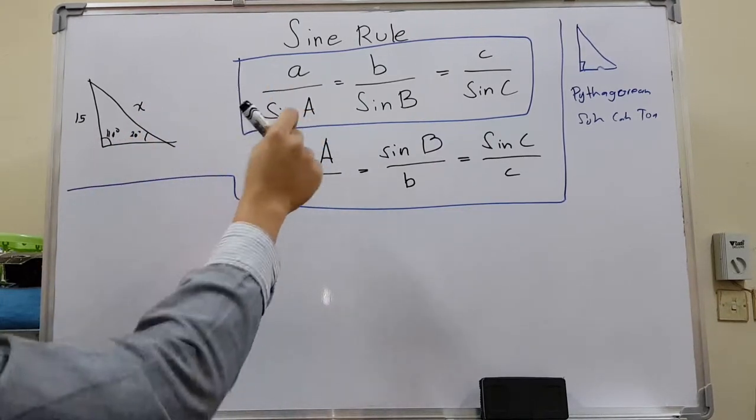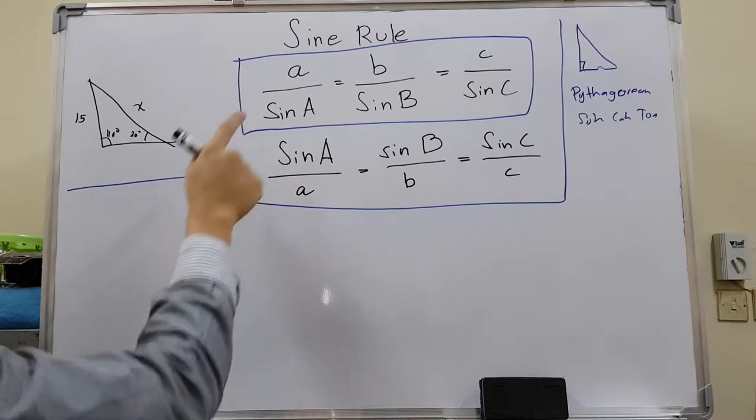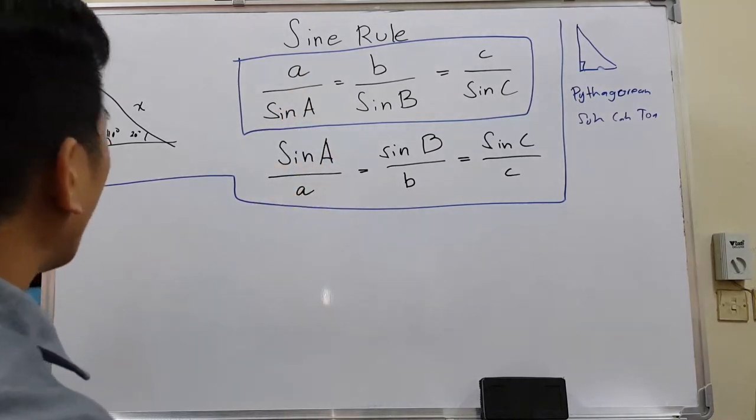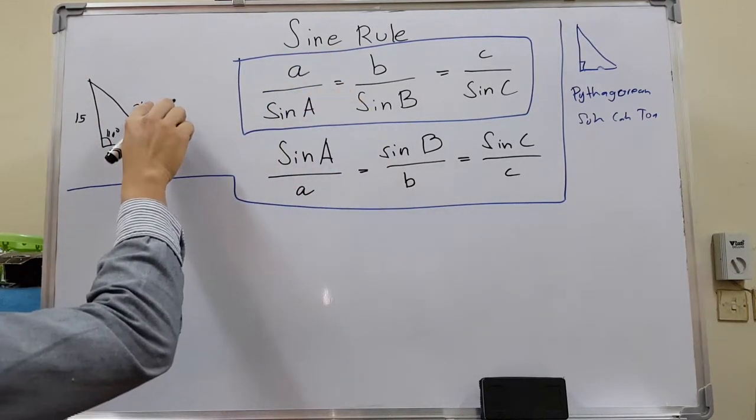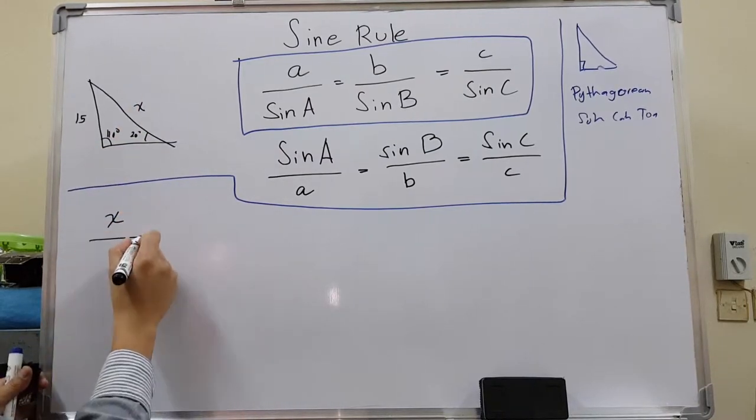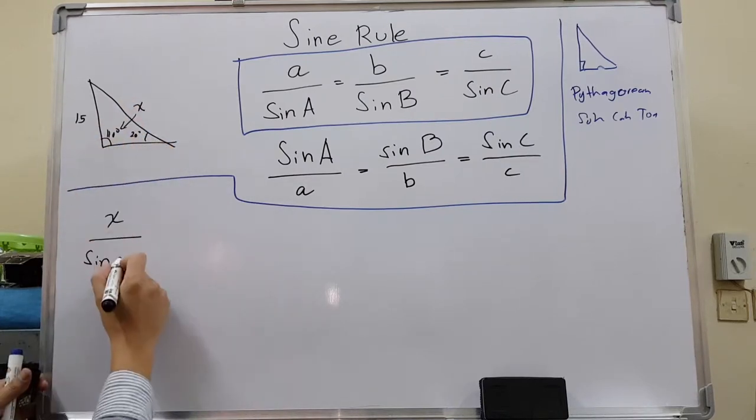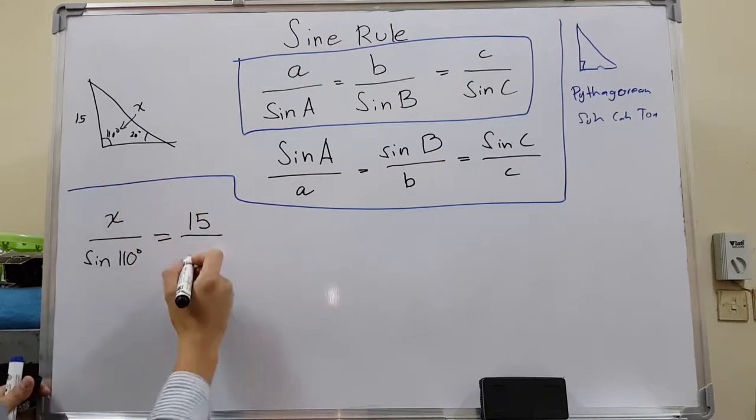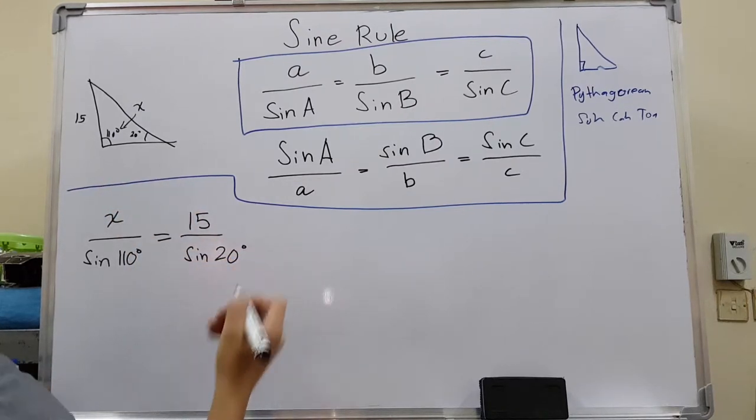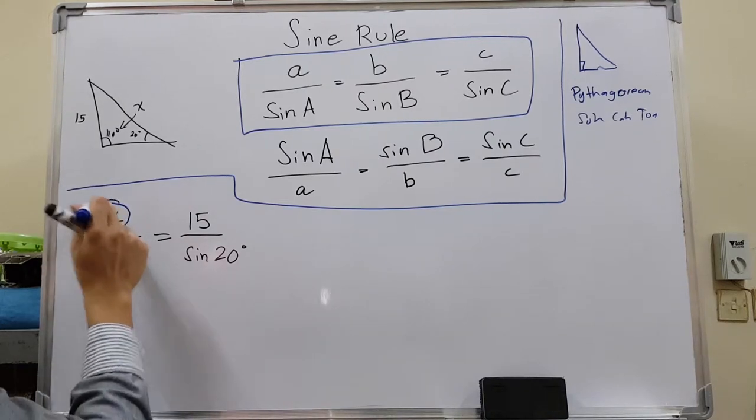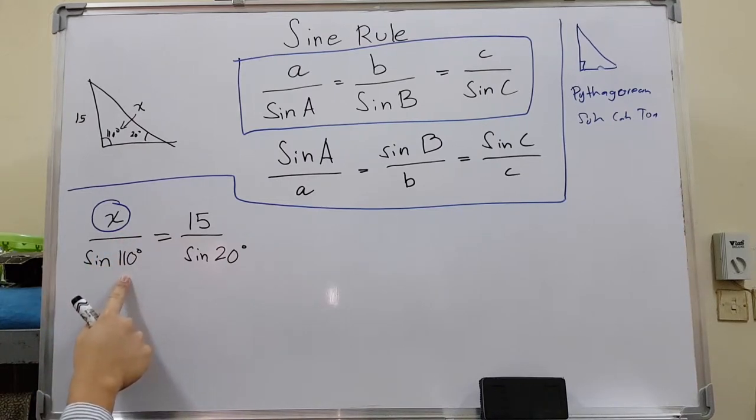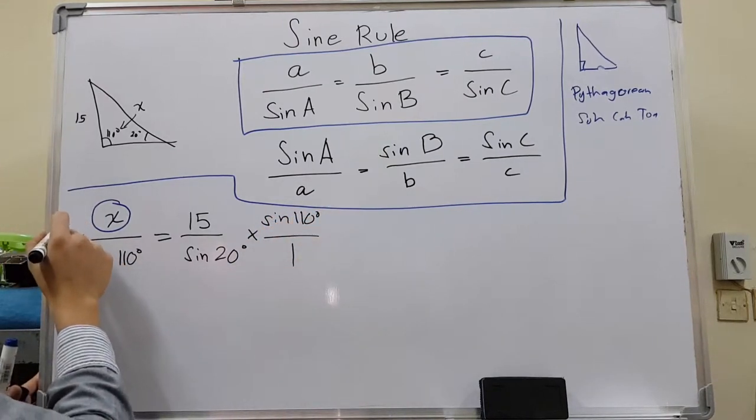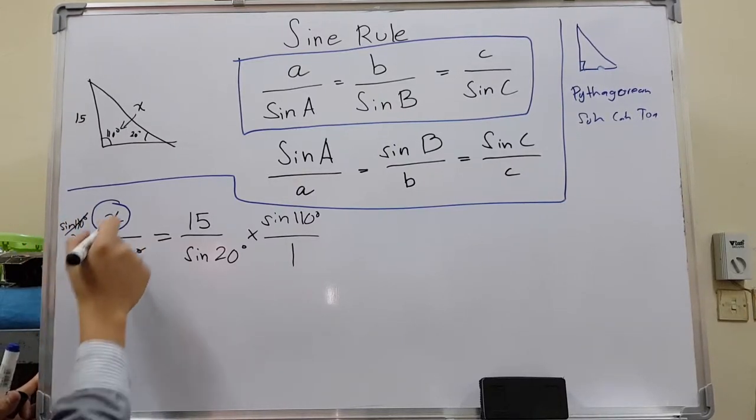I have two formulas. I can use any of them. But for beginners, you can use this one: a over sine A, or basically the side over sine the angle. For example, our side X is missing, over sine the angle opposite to X, which is 110 degrees. Equivalent to 15 over sine 20 degrees. Since I am looking for X, and X is being divided by sine 110, I can multiply both sides by sine 110 to cancel this out, leaving X behind.